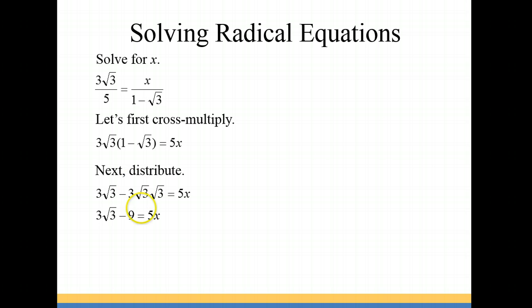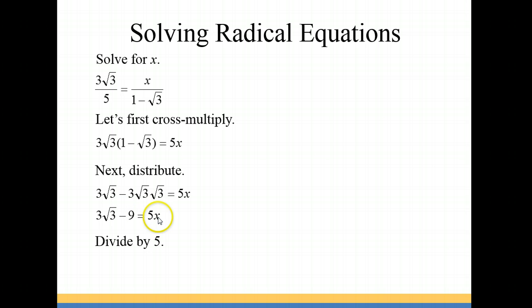Now we're going to simplify. We have 3√3 times √3: those last two become 3 times another 3, which is 9. So you have 3√3 minus 9 equals 5x, and then to isolate x we're going to divide by 5. So we have our answer for x and we want to check our work.